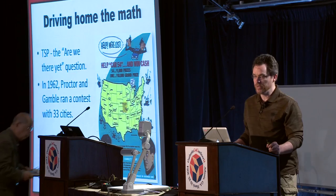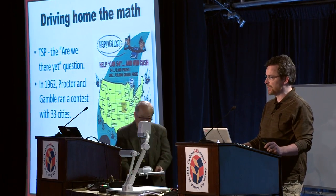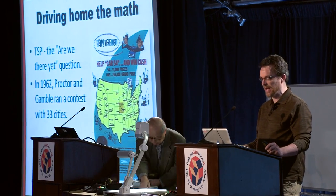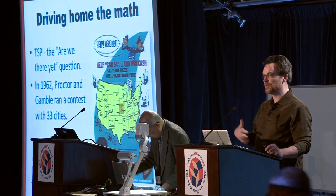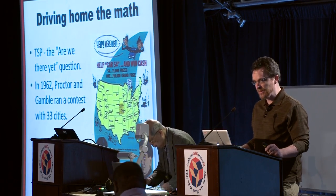For TSP, it's basically trying to minimize some aspect of a trip. If you're a parent, it could be minimizing the number of times you're asked 'are we there yet?' You have some locations, you drive around, come home, and visit each location only once. It's a problem of a lot of interest. UPS uses it to save money, and in 1962 Procter and Gamble ran a contest with 33 cities. If you're not familiar with the problem, you can pick 32 cities and quickly see that you would very much want a computer to help you.